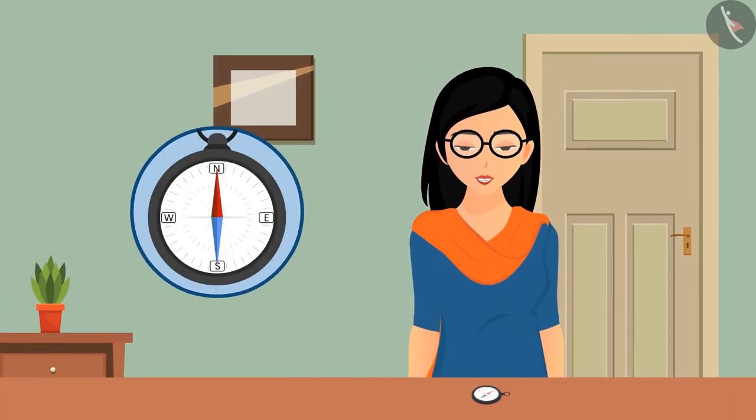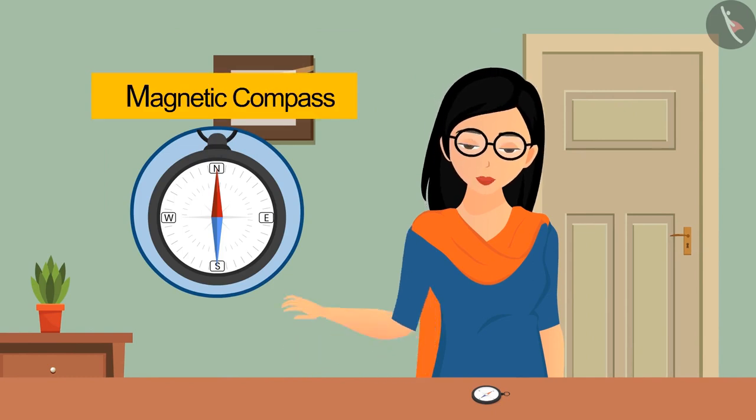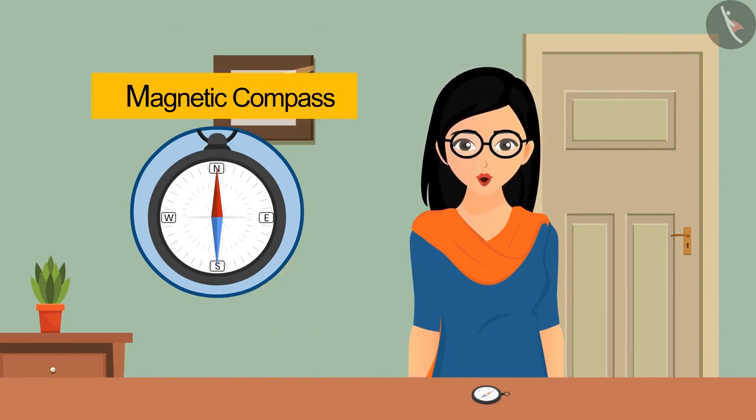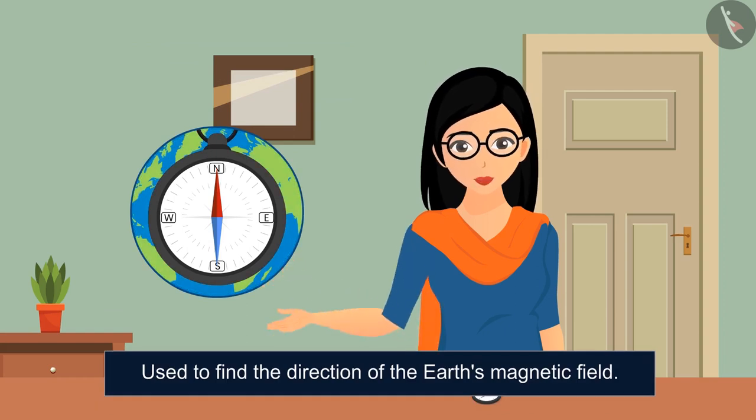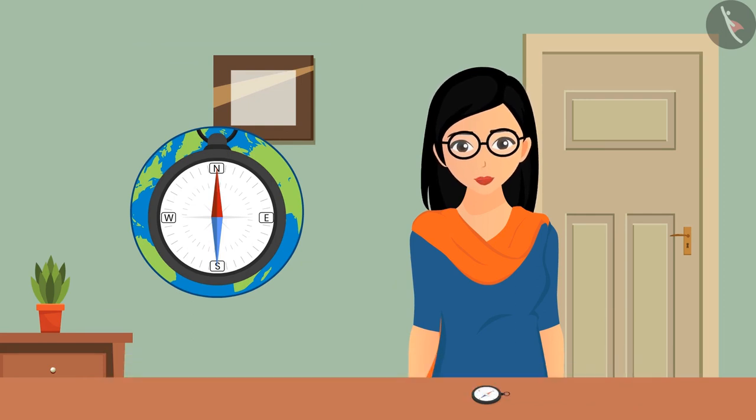This device is called a magnetic compass which is used to find the direction of Earth's magnetic field. Our earth also acts like a big magnet which you will study in the higher classes.